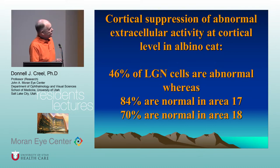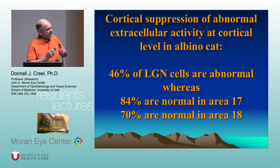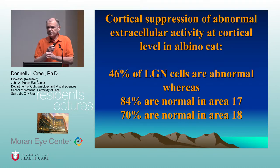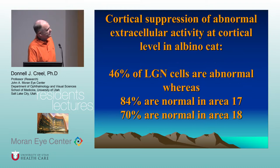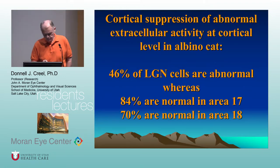One of the interesting things here is that things are so abnormal at the geniculate, but by the time you get up to the cortex, 84% of the cells are normal in area 17 and 70% are normal in area 18, whereas in the lateral geniculate only about half of the cells are normal. We don't know why.